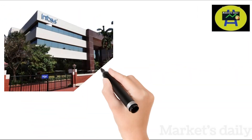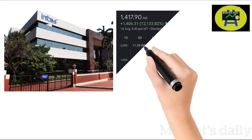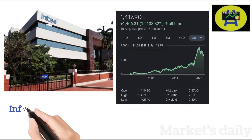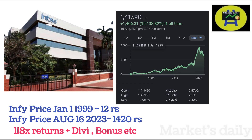Let's consider this example: if we had bought an Infosys share on June 1st 1999 at 12 rupees, the price of Infosys stock as of 16th August 2023 is 1420 rupees — a 118 times return, plus bonus and dividends. Without including bonus and dividend, if you had invested 1 lakh rupees in 1999, you would get 1 crore 18 lakhs. If you include dividend and bonus, it exceeds 100 crores.